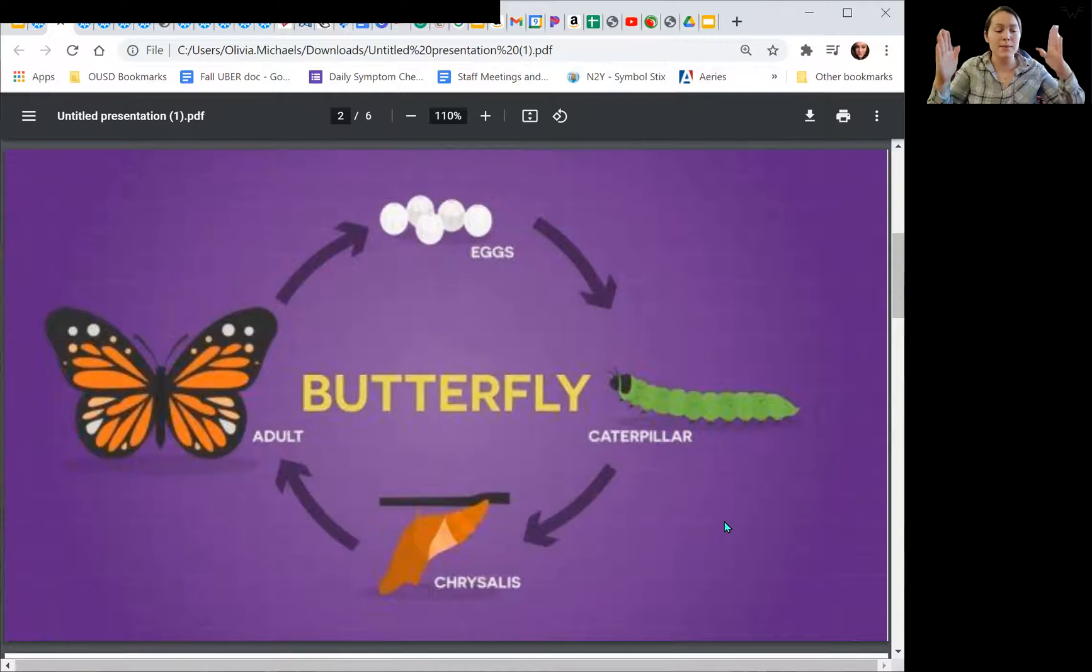And then after we're caterpillars and we eat lots of really yummy foods to make us big caterpillars, we are going to wrap ourselves tight and we're going to make a cocoon. And once we make our cocoon around ourselves, a little house around ourselves and our chrysalis, we're going to sleep. Ready? We're going to sleep.